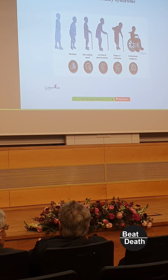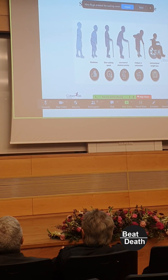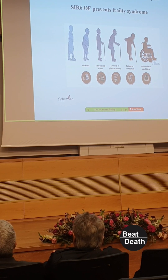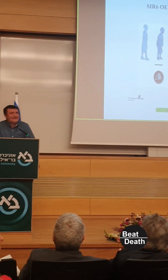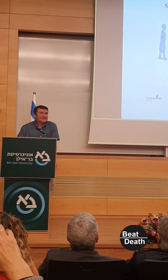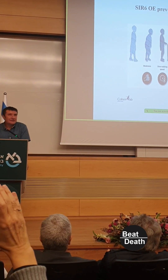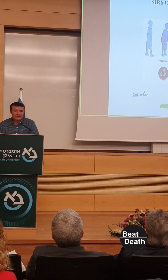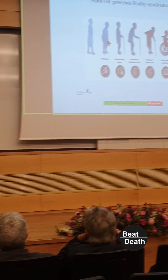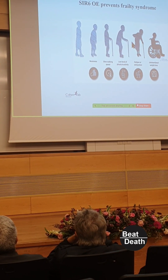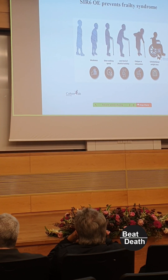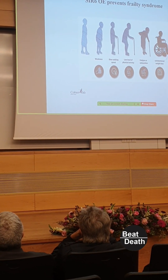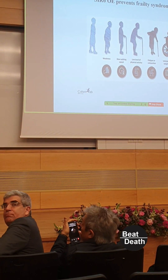One of the main phenotypes of aging is called the frailty syndrome. Almost 70% of individuals above age 80 exhibit frailty, and five to ten percent of individuals above age 65. The main characteristics of frailty are weakness, slow walking, low levels of physical activity, exhaustion, and weight loss even without dieting. What we found is that SIRT6 overexpression blocks the frailty syndrome.